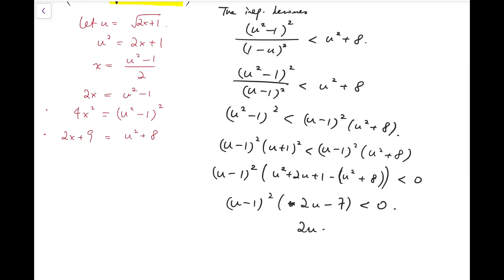So we must have 2u minus 7 to be less than 0. And of course, we can't have u to be 1. Because when u is 1, then left hand side, this whole bunch would then be 0. So that will make the inequality no longer hold. So that means u is less than 7 over 2. And of course, u is not equal to 1.